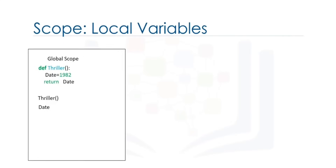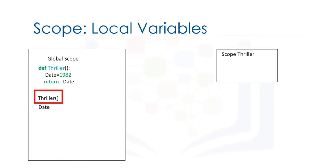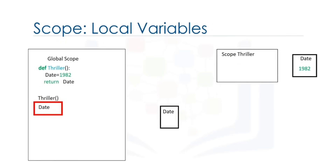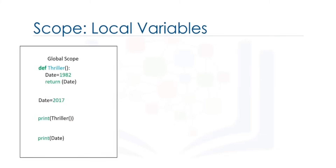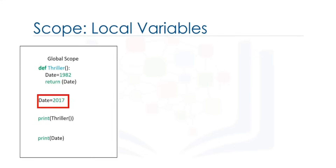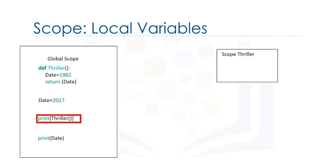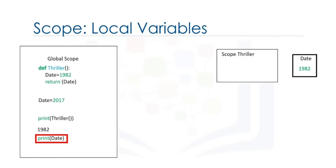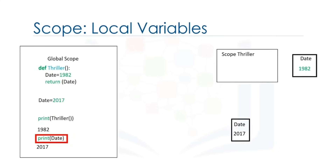Local variables only exist within the scope of a function. Consider the function thriller — the local variable date is set to 1982. When we call the function, we create a new scope, and within that scope the value of date is set to 1982. The value of date does not exist within the global scope. Variables inside the global scope can have the same name as variables in the local scope with no conflict. The global variable date is set to 2017. When we call the function, it returns the value of date in the local scope — in this case 1982. When we print in the global scope, we use the global variable value, which is 2017.